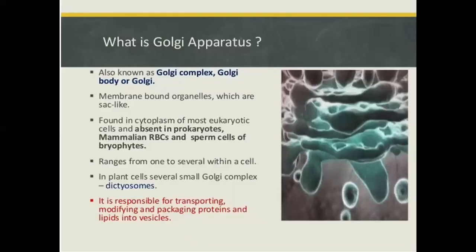The Golgi apparatus, also known as Golgi complex or Golgi body, is a membrane-bound organelle with sac-like structures found in the cytoplasm of most eukaryotic cells and absent in prokaryotes. Mammalian cells and sperm cells can range from one to several Golgi complexes within a cell. In plant cells, several small Golgi complexes called dictyosomes are present. The Golgi is responsible for transporting, modifying and packaging proteins and lipids into vesicles.